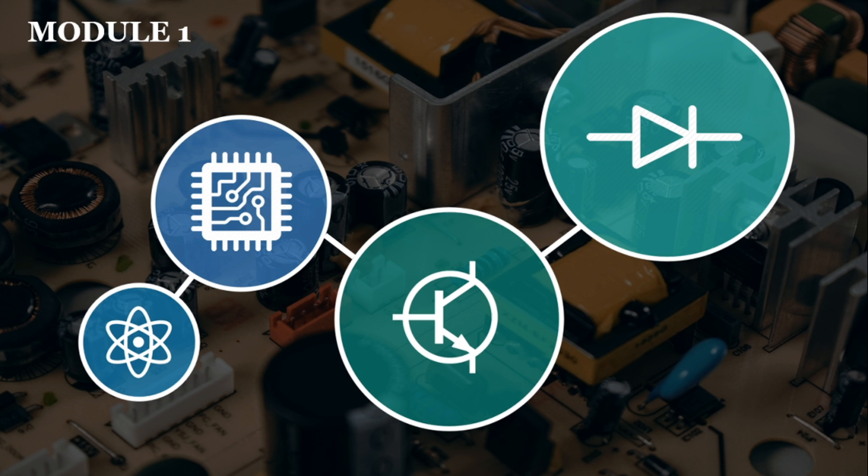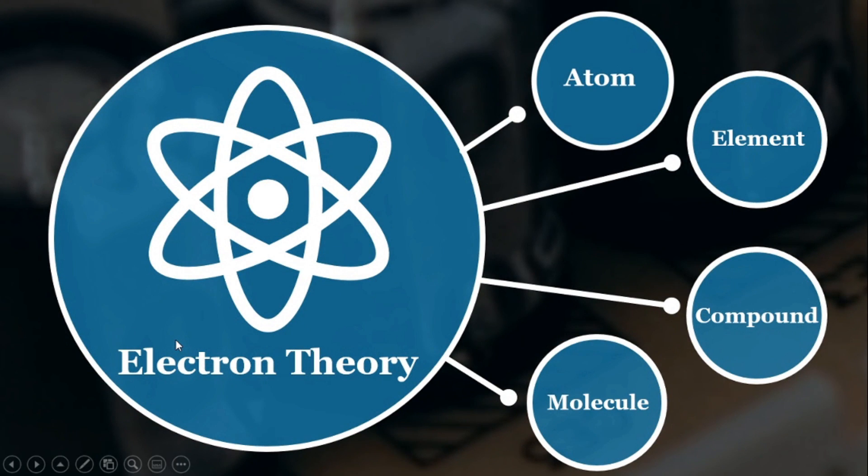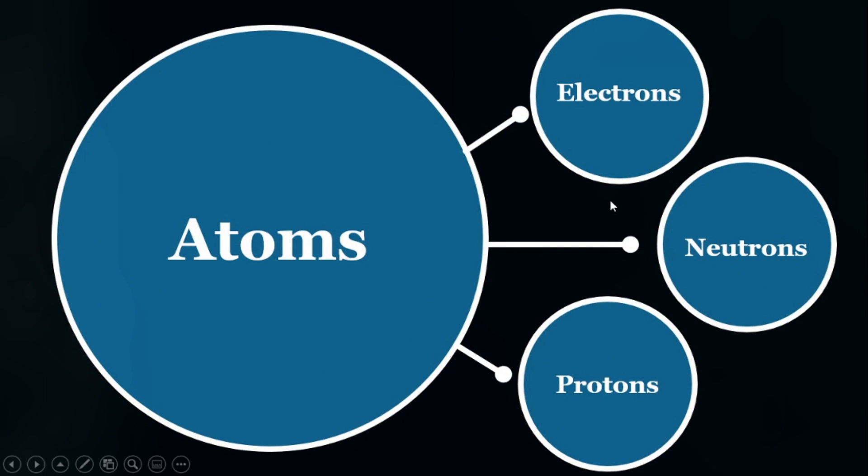Module 1 covers electron theory. This includes an explanation of what is meant by an atom, an element, a compound, and a molecule. It also includes the composition of an atom in terms of electrons, protons, and neutrons, and the importance of the balance between protons and electrons.